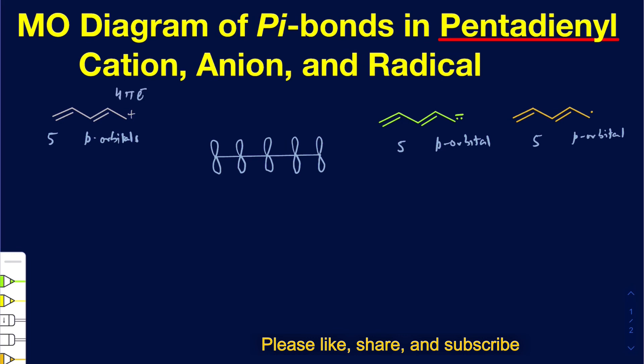In the case of an anion, we do have a lone pair of electrons. That's going to be a delocalized lone pair of electrons participating in the resonance, so it's going to be part of the conjugation. That gives me a six pi electron system. In the case of a radical, it's going to be a five pi electron system because you only have one electron there that's going to be part of the conjugation with the rest of the system.